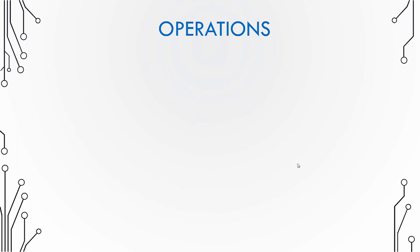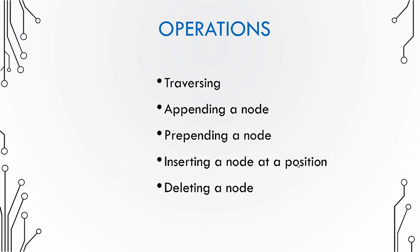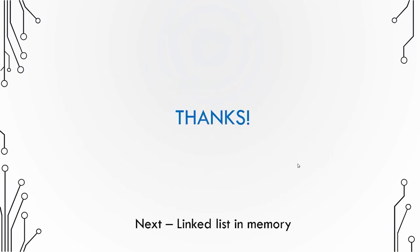Operations on a linked list include: traversing (navigating to a particular node), appending (adding a node to the end), prepending (adding a node to the start), inserting at a particular position, and deleting a node. Next, we will see how linked lists are organized in memory.